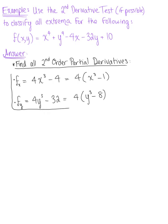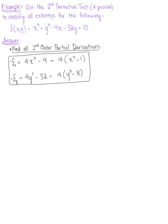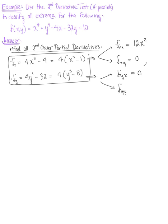So here are our first order partials, and we now need to find our second order partials. From the partial derivative with respect to x, the second partial of x with respect to x is 12x squared. The partial of x with respect to y is 0. Moving from the partial of f with respect to y, the partial of y with respect to x equals 0, and the partial of y with respect to y leaves us with 12y squared. These are our second order partials, which we will need for our second derivative test.